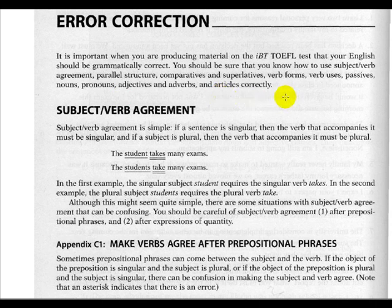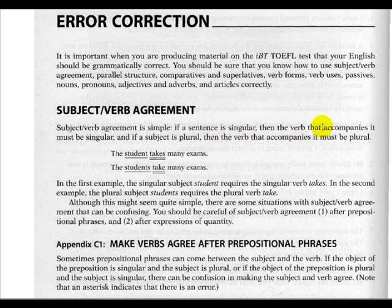Now, this first part is on subject-verb agreement, and we will go through it. Subject-verb agreement is simple: if the subject of a sentence is singular, then the verb that accompanies it must be singular.